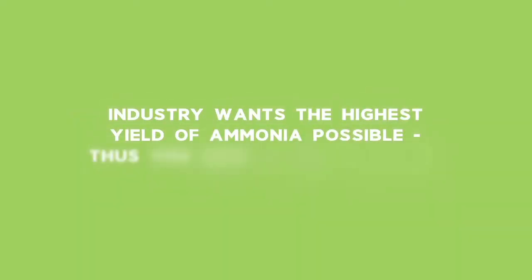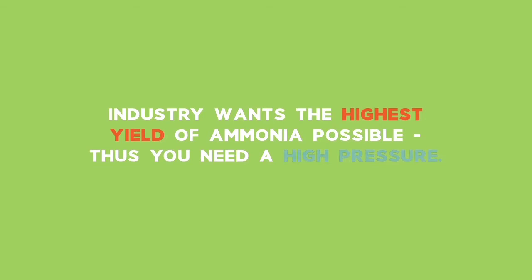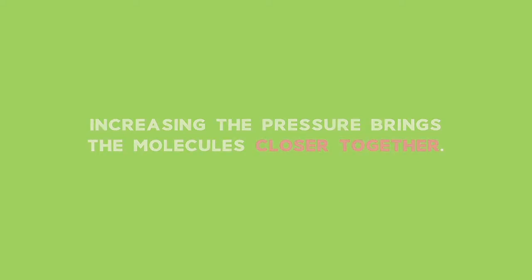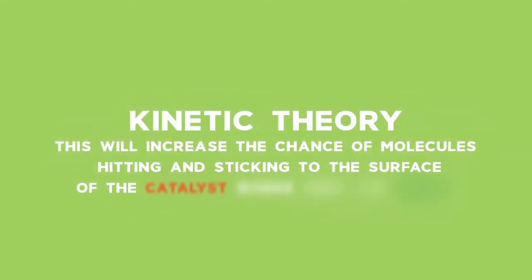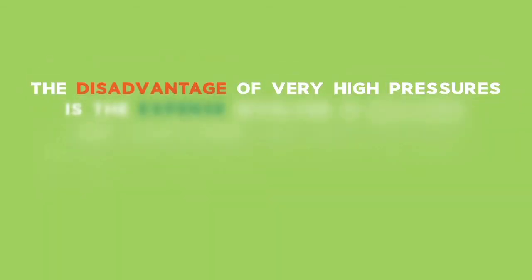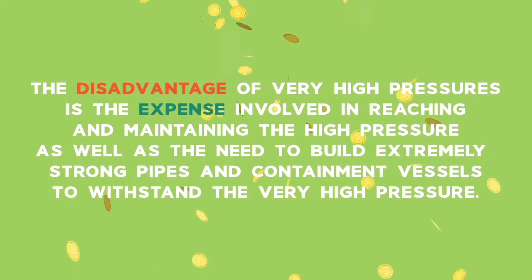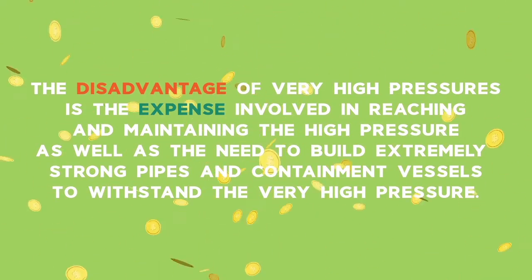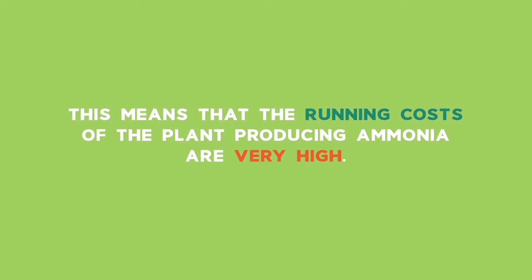Every industry wants to get as much ammonia as possible in the equilibrium mixture — that is, the highest yield possible. Thus, you need as high a pressure as possible. Increasing the pressure brings the molecules closer together. By kinetic theory, it will increase the chance of molecules hitting and sticking to the surface of the catalyst where they can react. The higher the pressure, the better in terms of the rate of a gas reaction. The disadvantage of very high pressure is the expense involved in reaching and maintaining it, as well as the need to build extremely strong pipes and containment vessels, meaning that the running costs of the plant are very high.